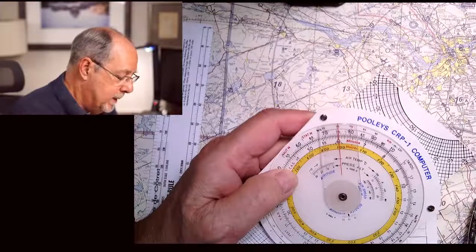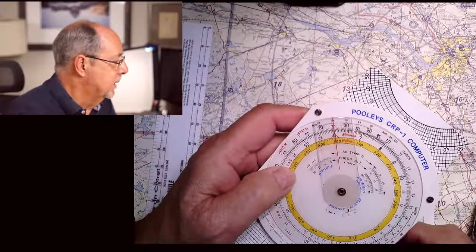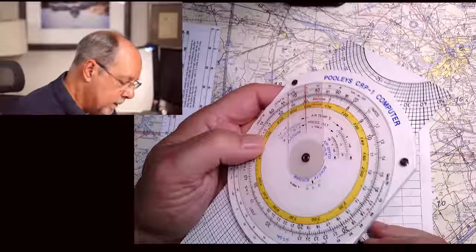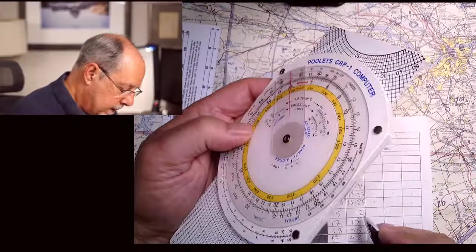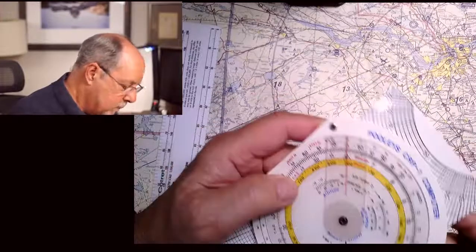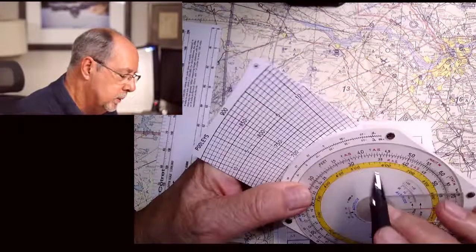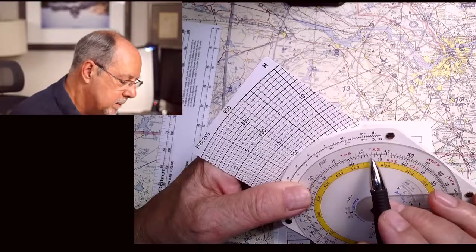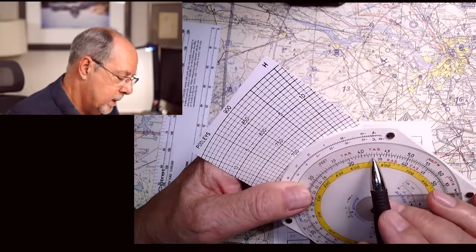So now my ground speed looks like it's 75. Well, that's better, but it's still certainly not what I expected. And now I have my ground speed at 75, and I have now 42 miles to do. So it's going to take me 38 minutes.